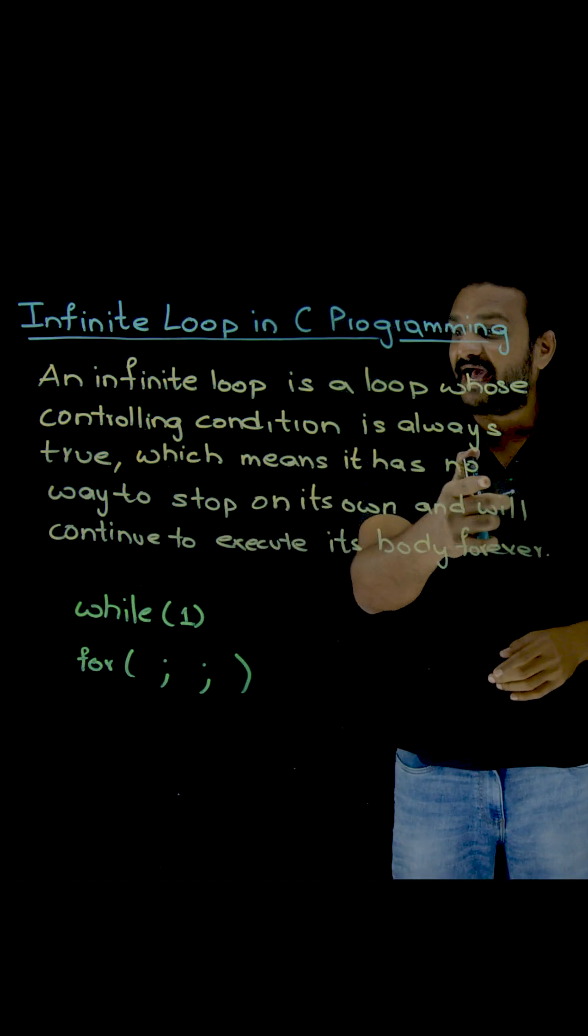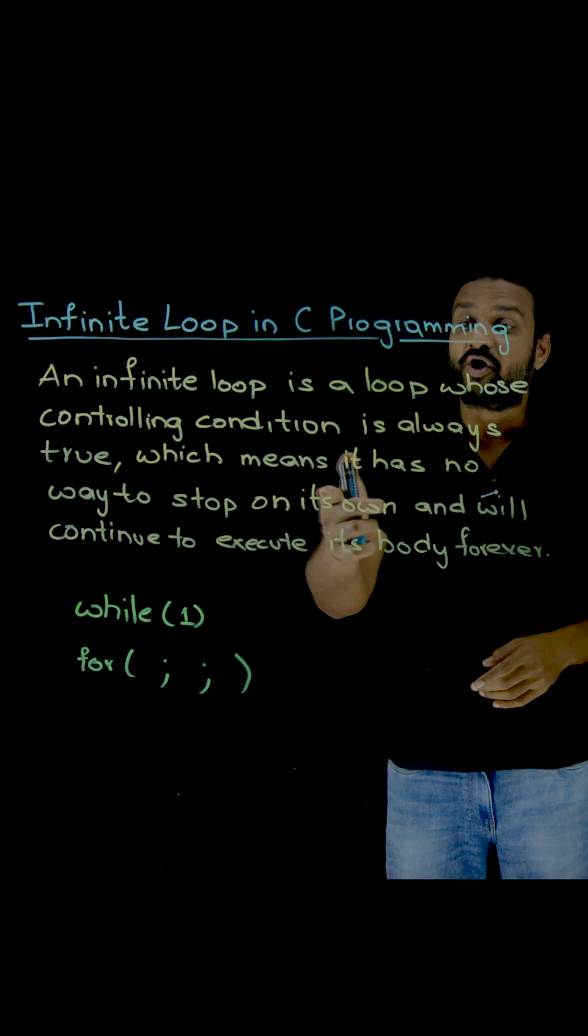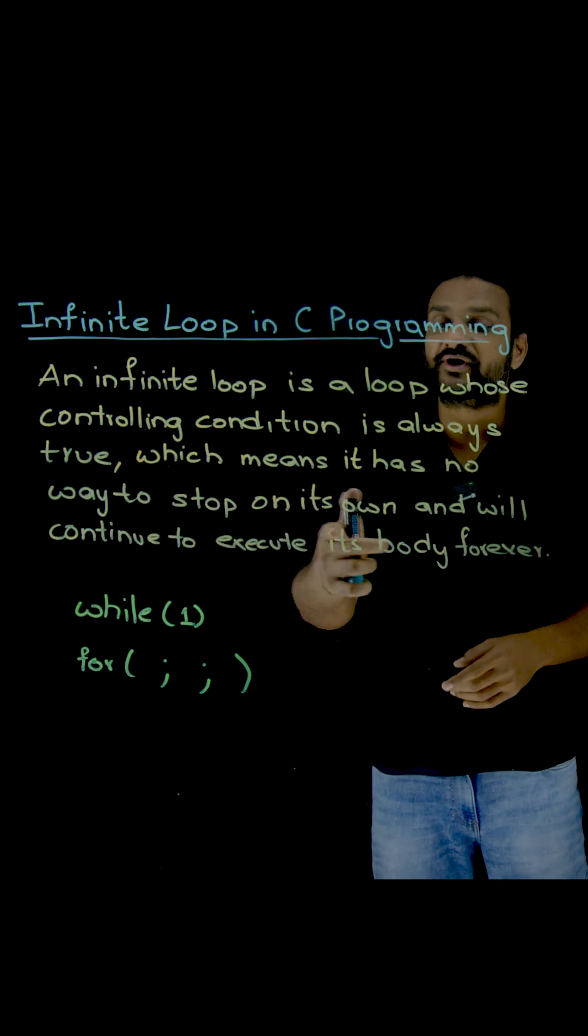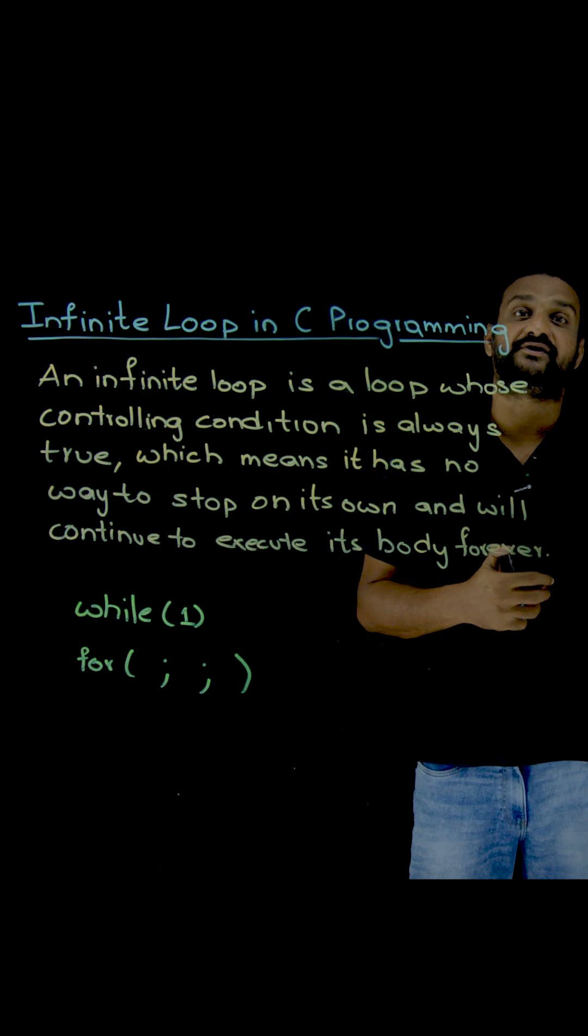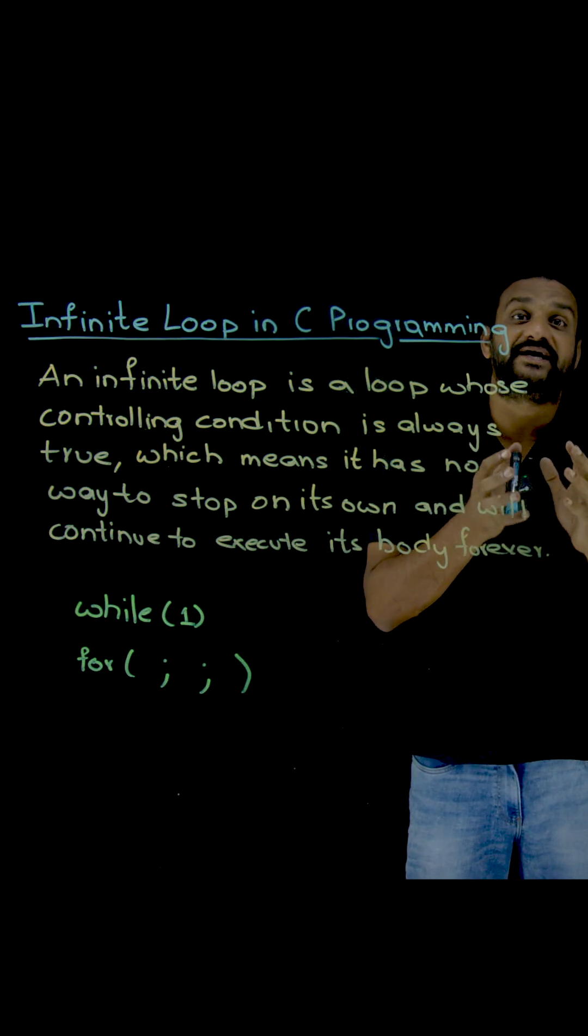Which means that it has no way to stop on its own and will continue to execute its body forever. The loop's body is going to execute forever, so those loops are called infinite loops.